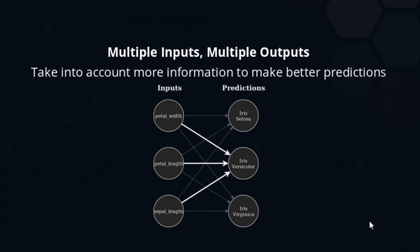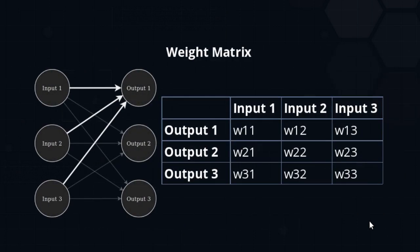This will be very similar to what we have done before, but before we move on we need to learn one more concept: how we are going to represent our data and weights. Just as before, inputs will be in a list — in other words, a vector of values. We have three inputs, just three numbers contained in a Python list. But this time we have a lot more weights, and each of the outputs has three weights coming into it. To neatly represent them, we will use something called a matrix.